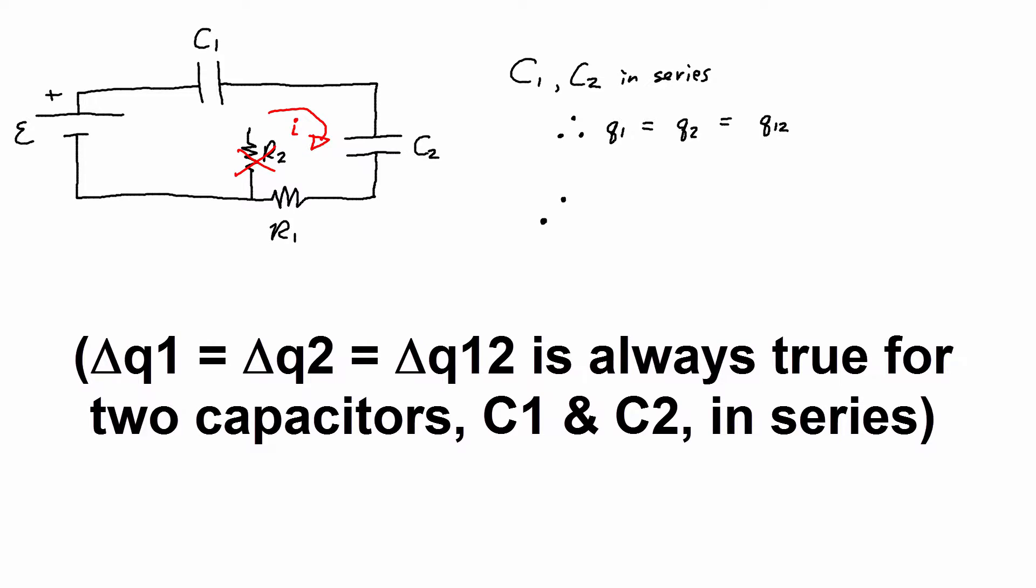Therefore the charge on Q2 at 70 microseconds is the same thing as the charge on Q12. So we have 5.5 microcoulombs. And that answers the first part of the question.